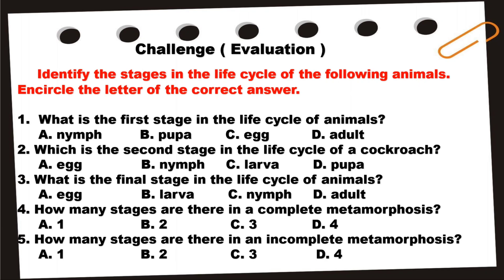For your evaluation, you are going to identify the stages in the life cycle of the following animals and circle the letter of the correct answer. Number one: What is the first stage in the life cycle of animals? A. Nymph. B. Pupa. C. Egg. D. Adult.